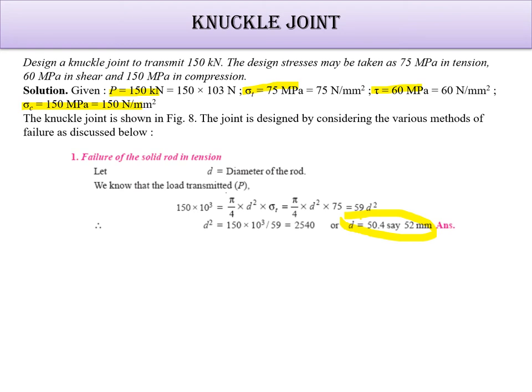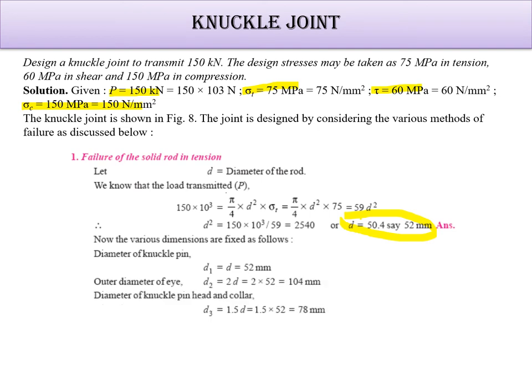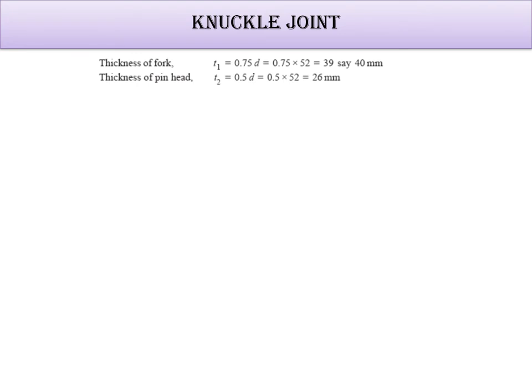Now the value is 52 mm. So various dimensions we are going to find out. D1 because it's an empirical design. D1 is equal to D is equal to 52 mm. D2 is 2 times D. D3 is 1.5 times D. Thickness of single eye is 1.25 times D. Then thickness of fork is 0.75 times D. T2 is 0.5 times D. We get all the values.